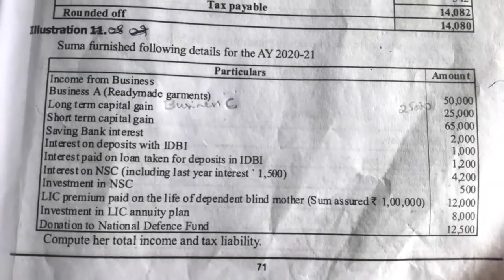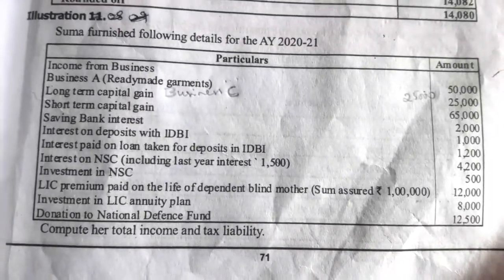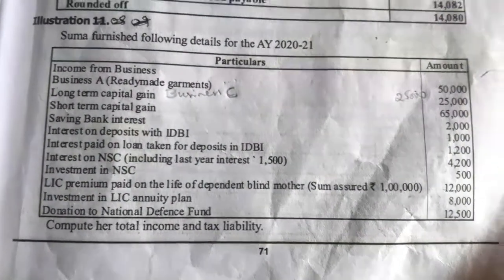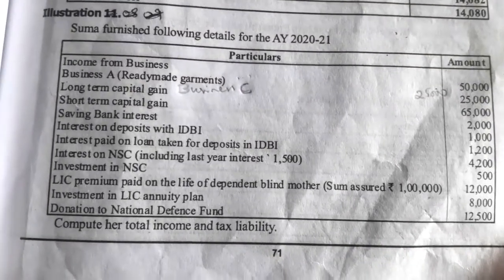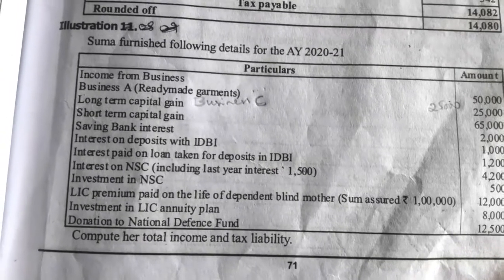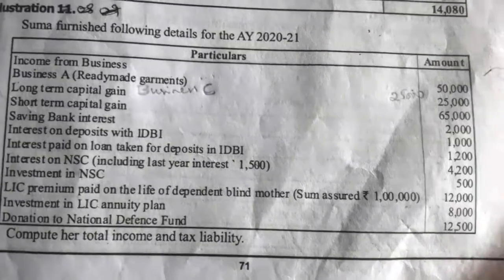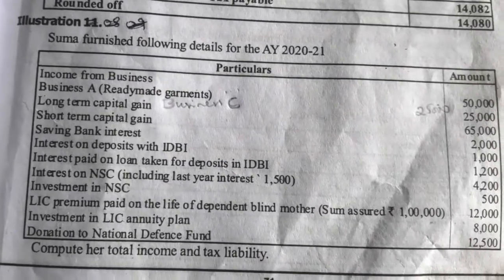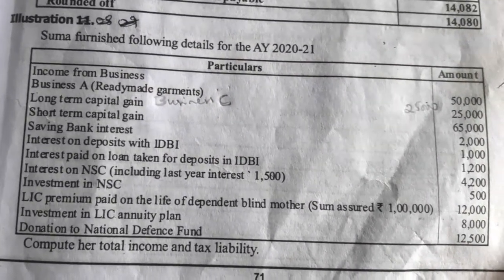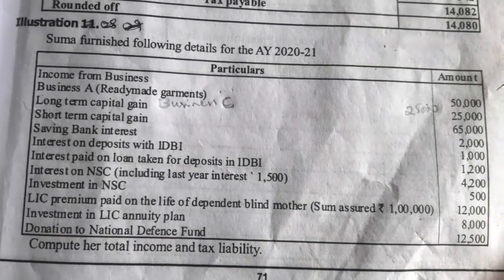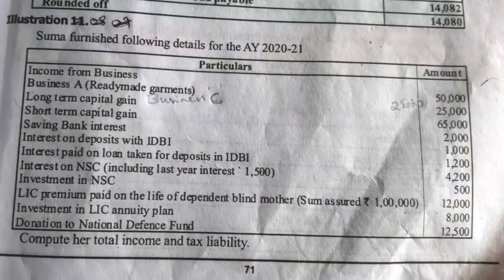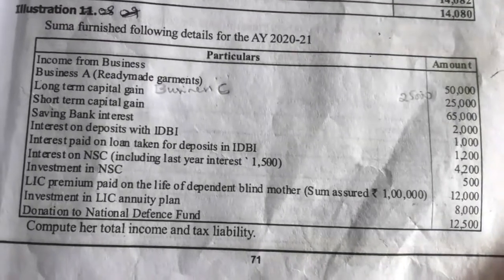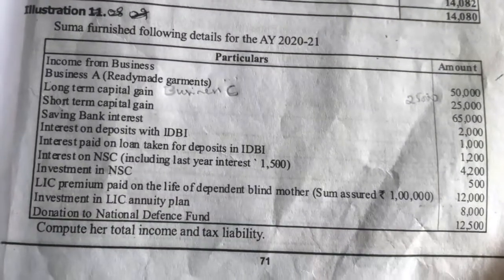Income from business: Business A — ready-made garment rupees 50,000; Business C rupees 25,000. Long-term capital gain rupees 25,000; short-term capital gain rupees 65,000. Saving bank interest rupees 2,000; interest on deposits with IDBI rupees 1,000; interest paid on loan taken for deposits in IDBI rupees 1,200. Interest on NSC including last year interest 1,500 — total rupees 4,200; investment in NSC rupees 500. LIC premium paid on the life of dependent blind mother, sum assured rupees 1,12,000; investment in LIC annuity plan rupees 8,000; donation to National Defense Fund rupees 12,500.